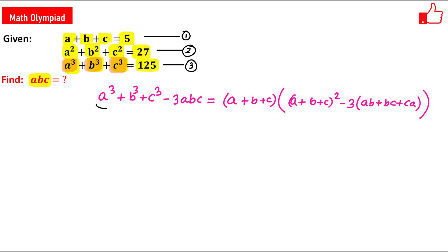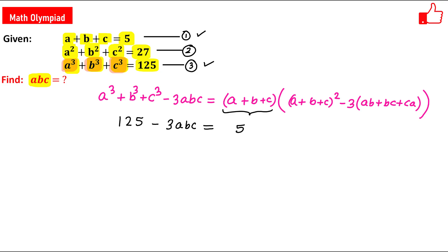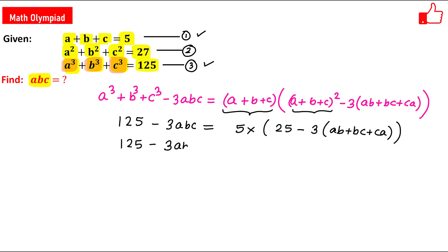Now the value of a cubed plus b cubed plus c cubed is given in equation 3, so this is 125 minus 3abc. And the value of a plus b plus c is given in equation 1, so this is 5 times [(5 squared, which is 25) minus 3 times (ab plus bc plus ca)].